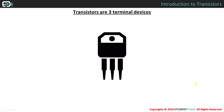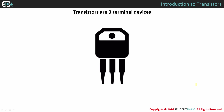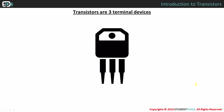Transistors are three terminal devices: base, emitter, and collector. These terminals are used to operate in three different configurations — common base, common emitter, and common collector — where the common terminals are grounded.